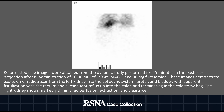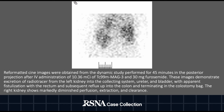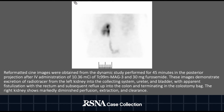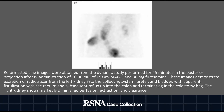Dynamic images were obtained after the administration of technetium MAG-3 and 30 milligrams of furosemide. These images demonstrate excretion of radiotracer from the left kidney into the collecting system, into the ureter and bladder, with apparent visualization with the rectum and subsequent reflux up into the colon which terminates in the colostomy bag.